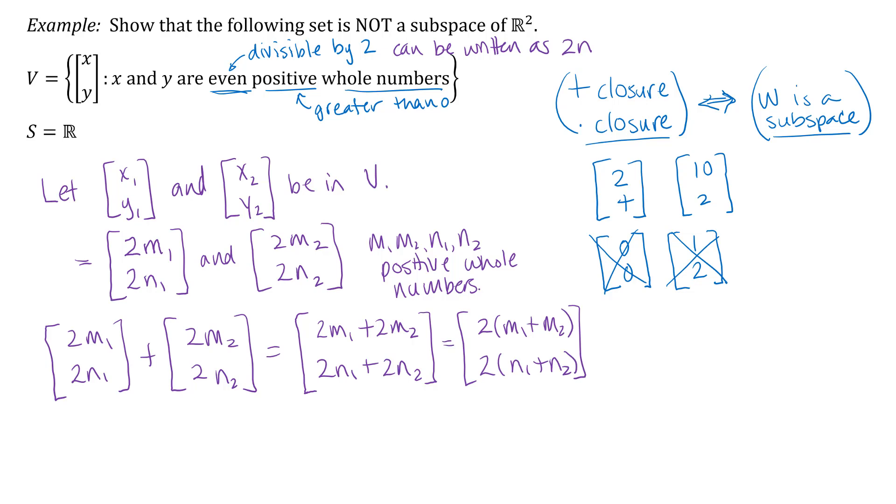When I add two vectors I just add their corresponding components, so I have 2m₁ plus 2m₂ in the first entry, 2n₁ plus 2n₂ in the second entry. And notice that I can factor a 2 out of those terms. And since we said that m and n are positive whole numbers, what I'm looking for here, notice that when I add two positive whole numbers I will also get positive whole numbers. So those things that I highlighted here are going to be positive whole numbers. So what I got when I added these two vectors in the set is another vector in the set because all of the entries can be written as two times a positive whole number. So this is also in the set V, so additive closure does hold.